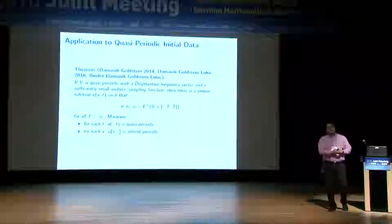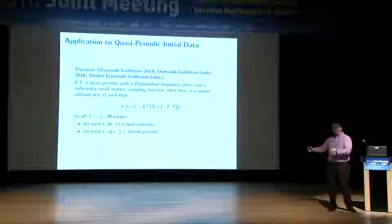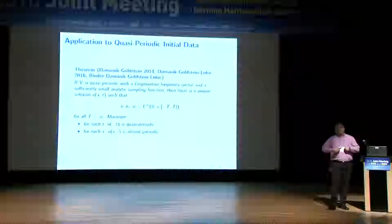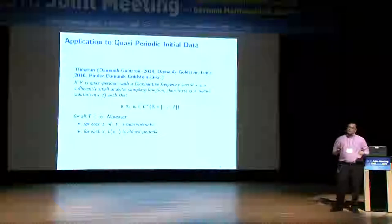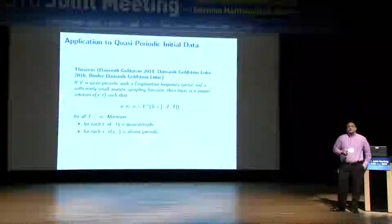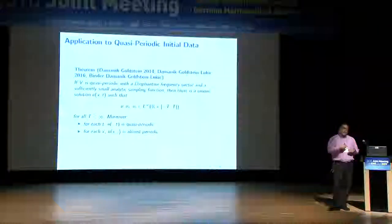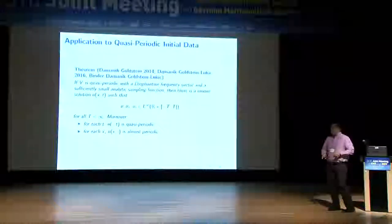I've explained what the Deift conjecture is and given two theorems that can be proved by implementing this perspective. The rest of the talk is about the perspective itself. What should it give you? We're looking for: first, a way of proving existence of a solution; and second, where does the almost periodicity come from? We need to produce this torus and a translation flow on it.